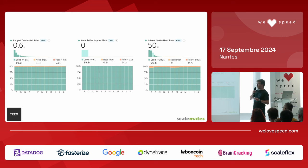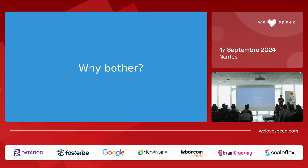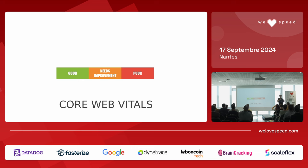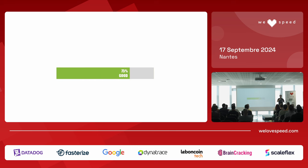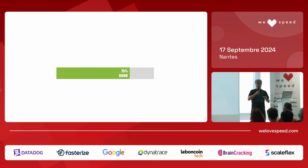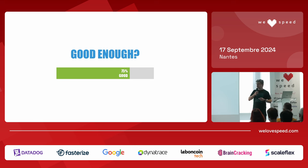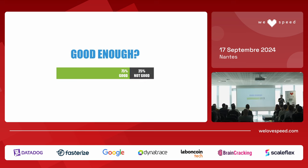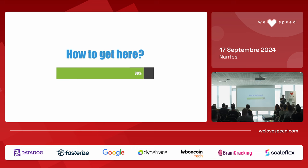Here you see the Core Web Vitals data. The first thing is: why should you bother? Because the goal everybody aims for is P75, and if the P75 is good, we applaud ourselves. But is P75 actually good enough? From a user experience perspective, if 75% of the user experience is good, it also means 25% is not good — one out of four — which is not ideal.